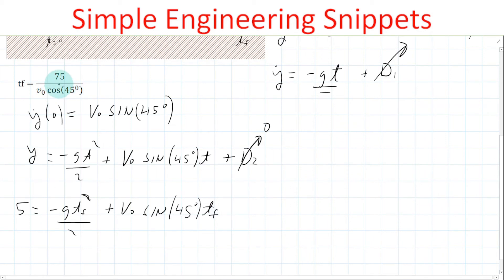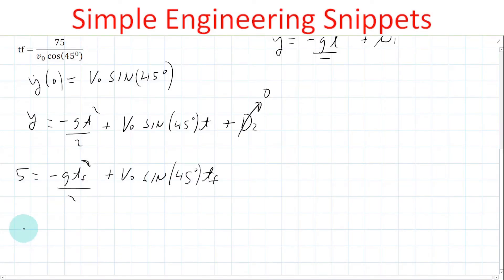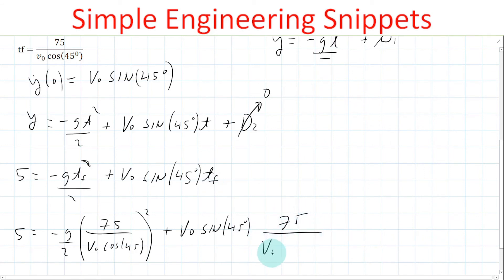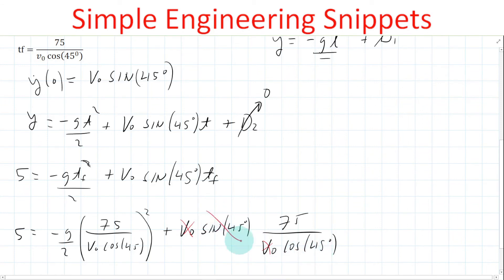Substituting TF: five equals minus G over two times the quantity (75 over V-naught cosine 45 degrees) squared, plus V-naught sine 45 degrees times (75 over V-naught cosine 45 degrees). On the second term, V-naught cancels between numerator and denominator, and since it's 45 degrees, sine 45 and cosine 45 are equal — so the second term simplifies to just 75.